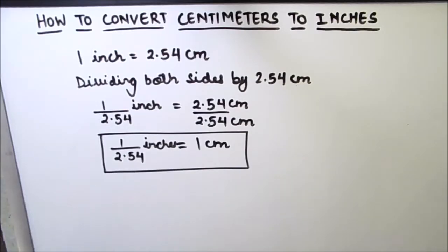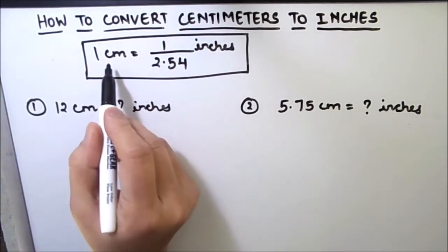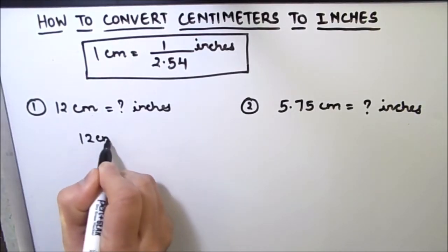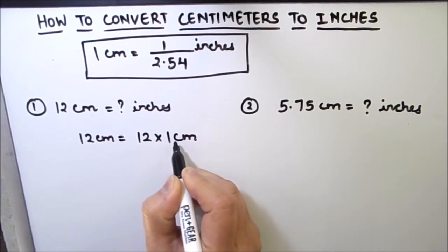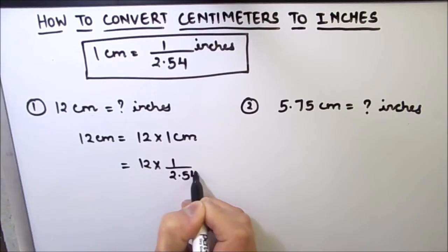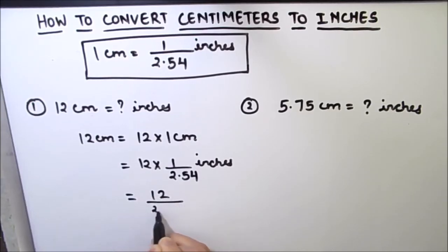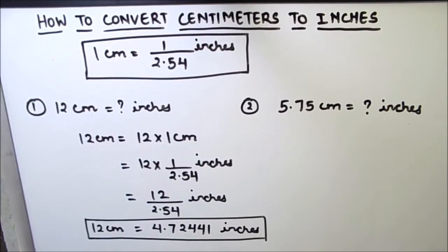Let us now see a few examples. In our first example, we have to convert 12 centimeters to inches. We have established that one centimeter is equal to one divided by 2.54 inches. So we can write 12 centimeters as 12 times one centimeter, and in place of one centimeter we put 1/2.54 inches. This gives us 12 divided by 2.54 inches, which comes out to be approximately 4.72 inches.